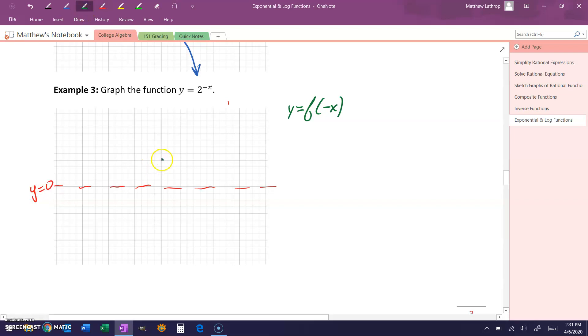We know that originally our graph would look something like this, but the fact that we have this y equals f of negative x form tells us that we're going to be reflecting that graph over the y-axis. So rather than this increasing curve, we're going to see a decreasing curve, which is just the mirror image of what we originally sketched out.